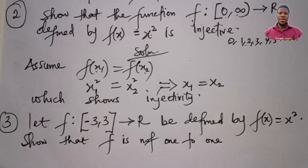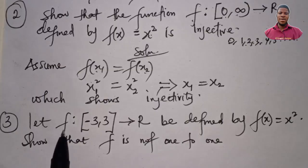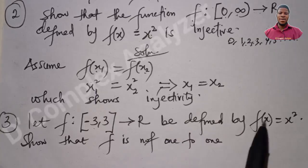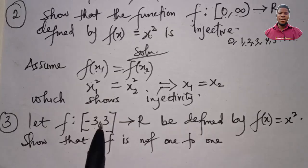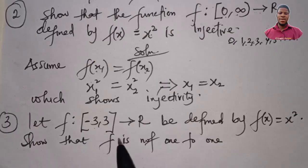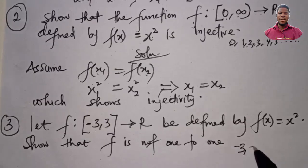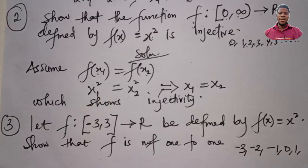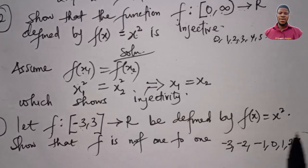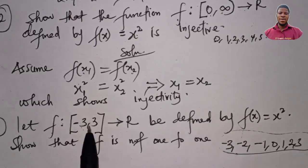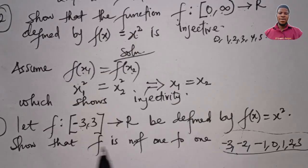Now let f be defined by f(x) = x² on the domain from -3 to 3. We are to show that f is not one-to-one. The elements of this domain include -3, -2, -1, 0, 1, 2, and 3. Whether this function is injective depends on the elements in the domain.